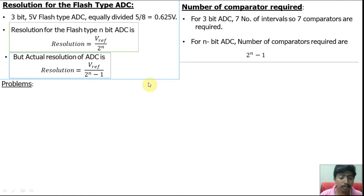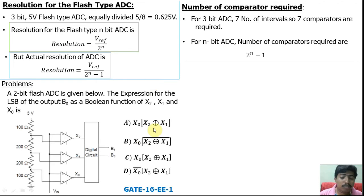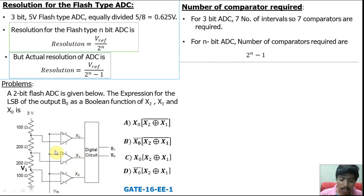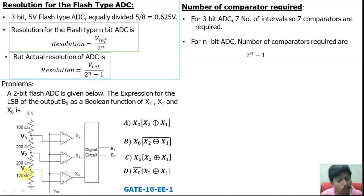Now we will solve a problem. This problem is asked in GATE and IEEE department examinations. We are going to find the B0 expression in terms of x2, x1, and x0 for a 2-bit flash type ADC. Number of comparators required: 2^2 − 1 = 3 comparators, which matches the circuit. First, find the minus terminal voltage of each comparator: V1, V2, and V3, using the voltage divider formula. Total voltage is 3 volt.